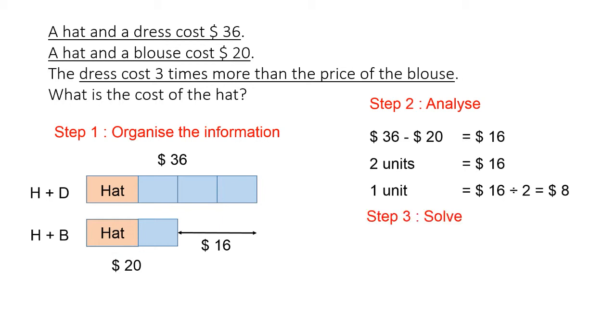So now, step three will be to solve the question. We know that the hat and the blouse cost $20, and the blouse is one unit, therefore the blouse cost $8. To find the cost of the hat, we simply take $20 minus $8. Based on our calculation, the cost of the hat, which is $20 minus $8, will give us $12. Then we have solved the question, and we find out that the cost of the hat is $12.